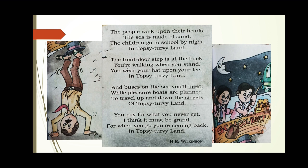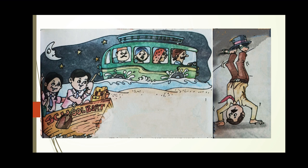To summarize: people walk on their heads; the sea is made of sand; children go to school by night; the front door steps are at the back of houses; if someone walks, they are actually standing; hats are worn upon their feet; buses are on the sea; boats travel in the streets; and when you pay for something, you don't get it. Everything is just opposite in Topsy-Turvy land.